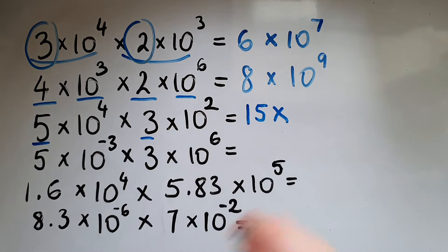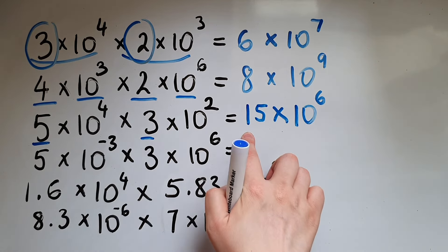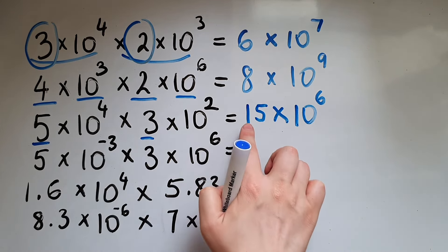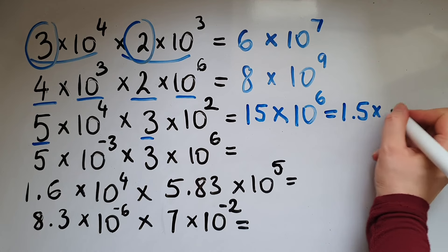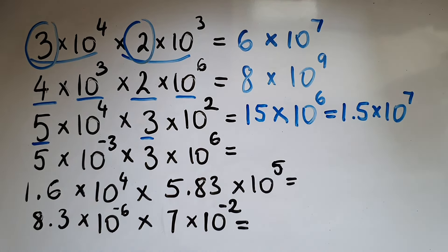But we shouldn't stop here, remember, because this coefficient needs to be between 1 and 10, inclusive of 1 but not inclusive of 10. So we'll write this as 1.5 times 10 to the power of 7.